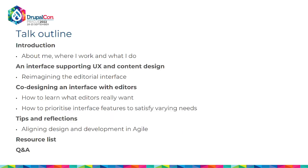Here's an outline of my talk. I'll give you a bit of background context about me and what I do, then dive into editorial interfaces — what they do and how important they are in supporting good UX and content design. I'll think about reimagining the editorial interface, co-designing it with editors, understanding what editors need, and prioritizing features. I'll finish with tips on aligning design and development within an agile framework. I'll reference several resources and books throughout, and provide a resource list at the end before Q&A.